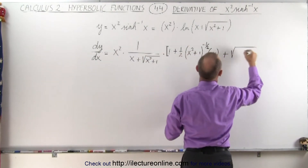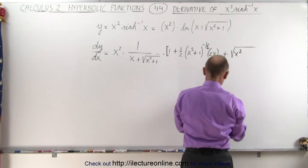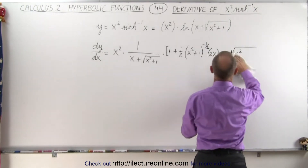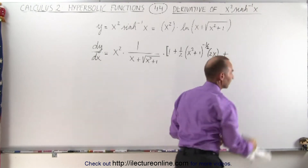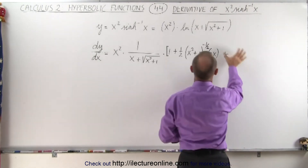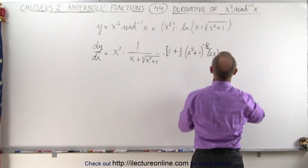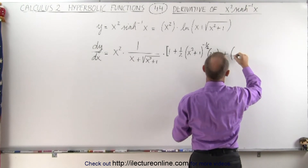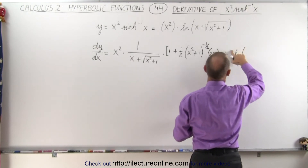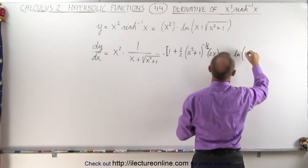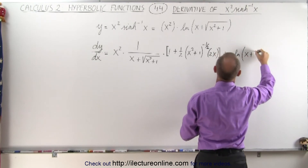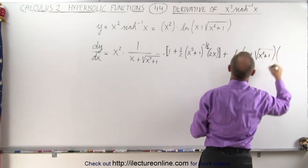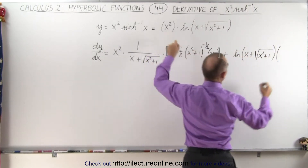So here we have the first times the derivative of the second, plus the second — which is the natural log of x plus the square root of x squared plus 1 — times the derivative of the first, which is 2x.